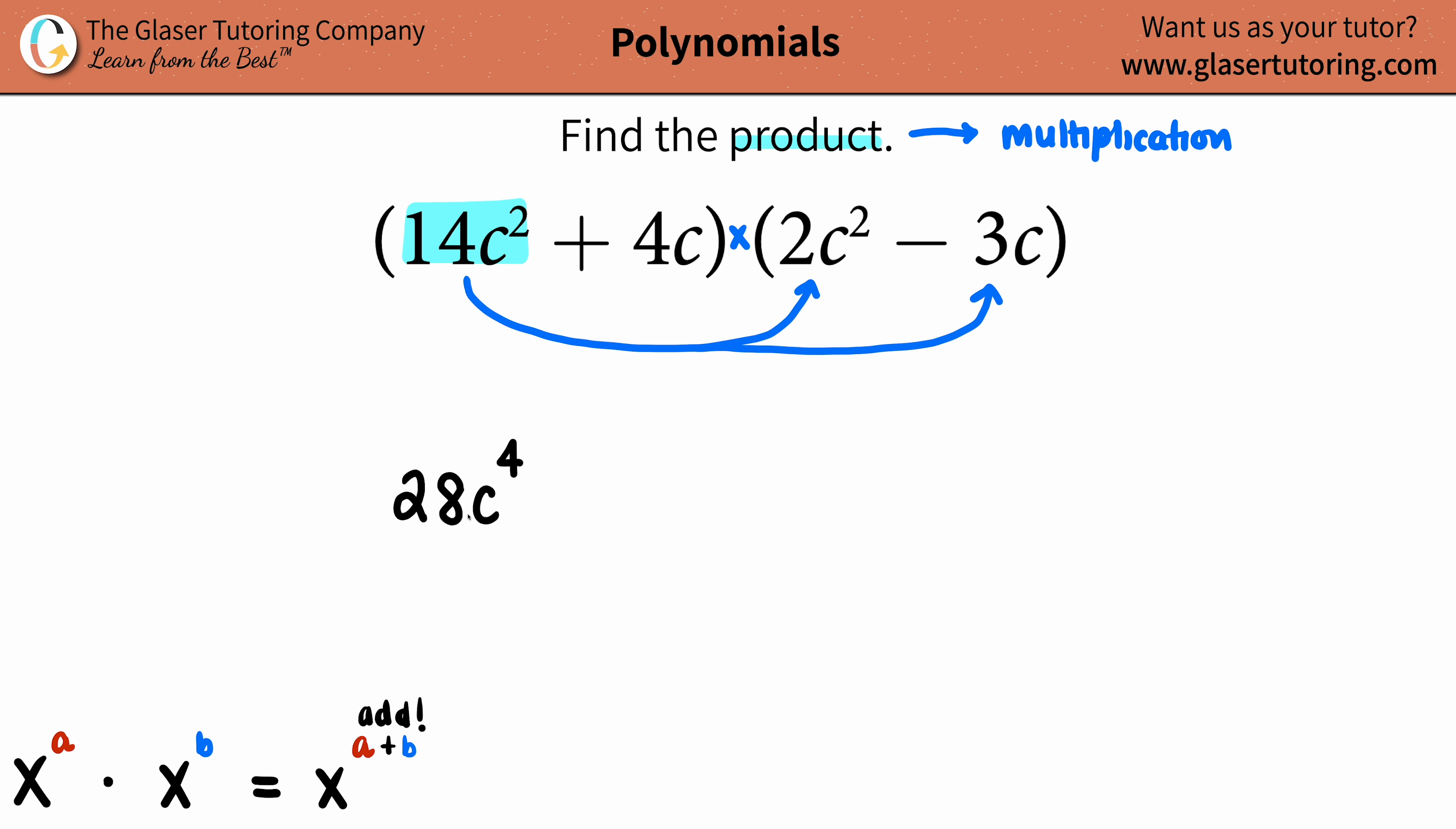Now let's be fair. We must multiply the 14c² by the negative 3. Do numbers first and then your variables.